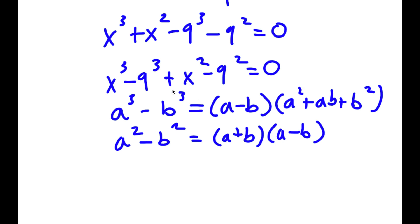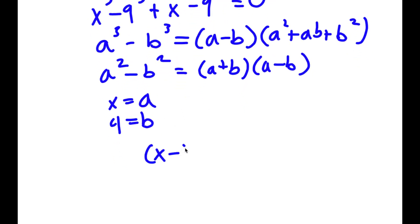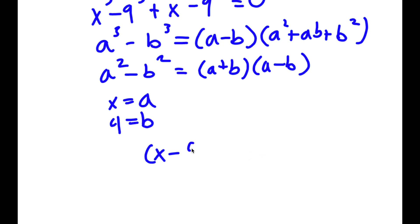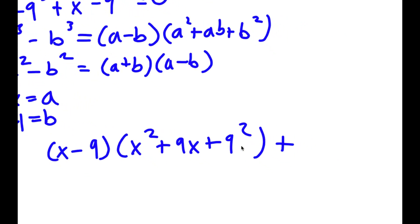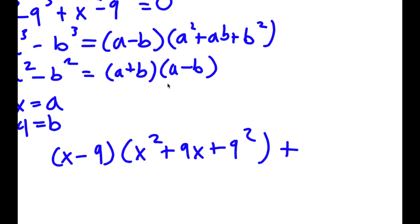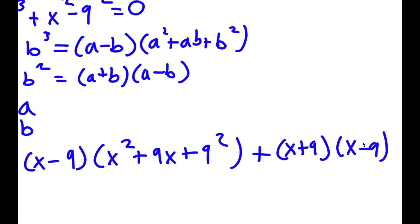I'm going to use these properties for x to the power of 3 minus 9 to the power of 3, and x squared minus 9 squared. For x cubed minus 9 cubed, x is a and 9 is b, so I get x minus 9 times x squared plus 9x plus 9 squared. For x squared minus 9 squared, x is a and 9 is b, so I get x plus 9 times x minus 9. This all equals 0.